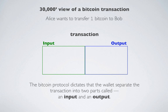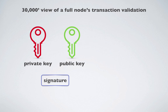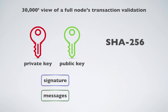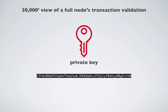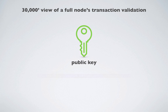Before we go any further in the validation process, let's do a very quick overview of how keys, signatures, and messages interact, how hashes work, and how full nodes can process certain commands using a language called Script. Ultimately, a private key is just a number. That number, when put through a series of computations based on cryptography, produces a public key. Again, the public key is just another number.